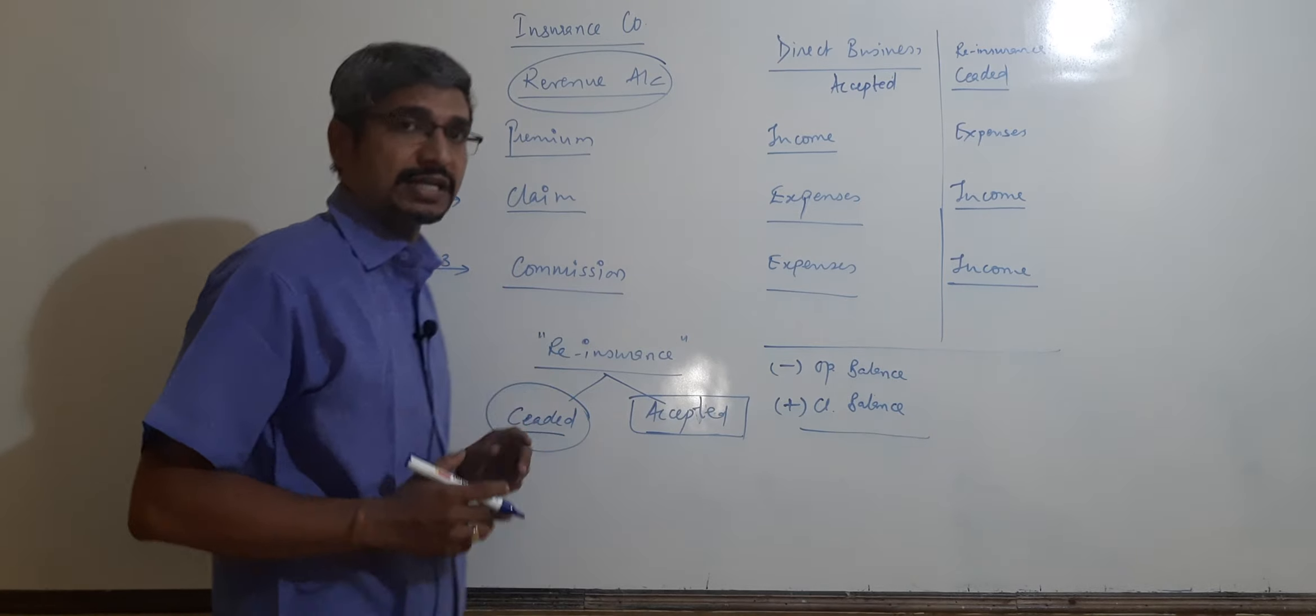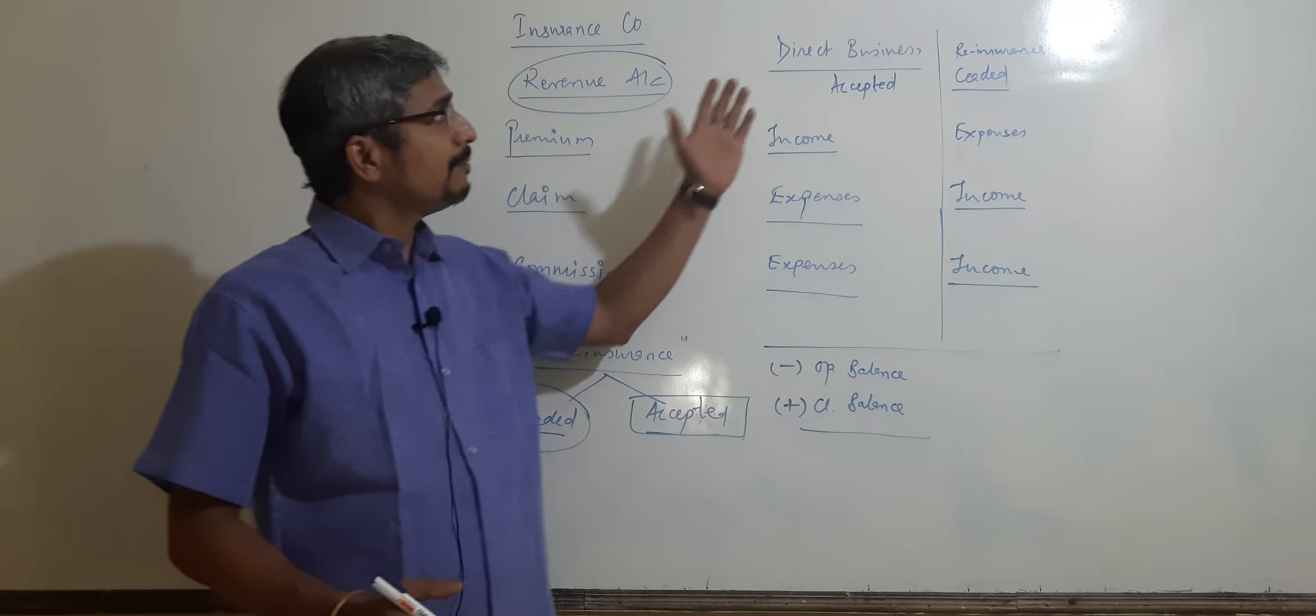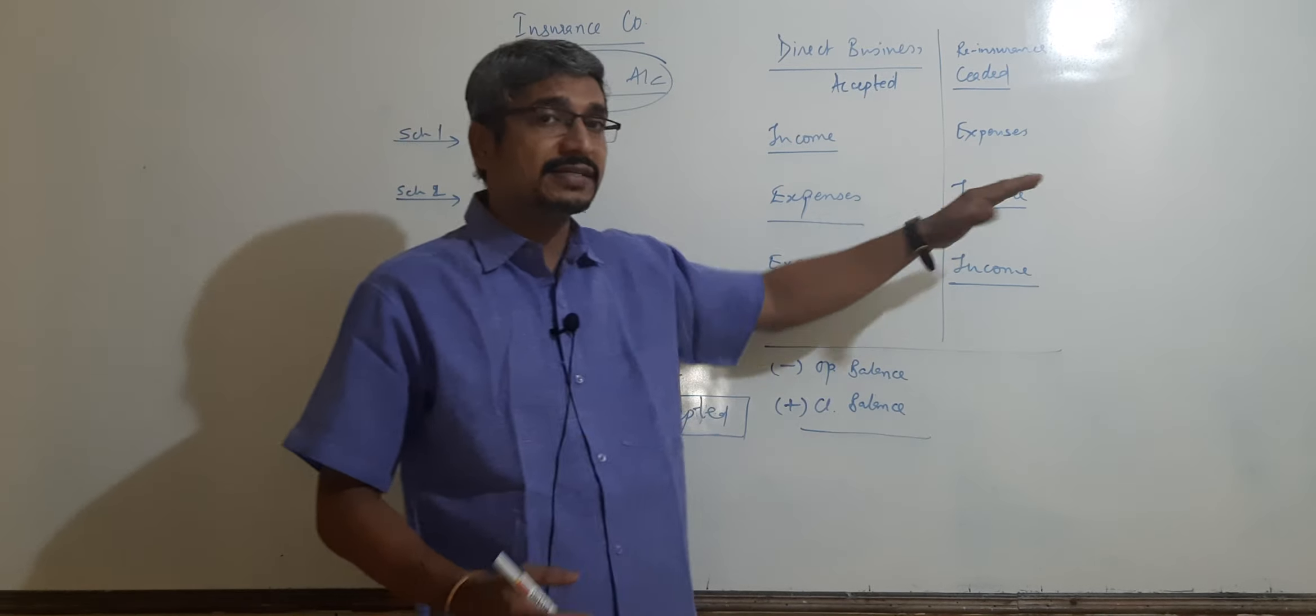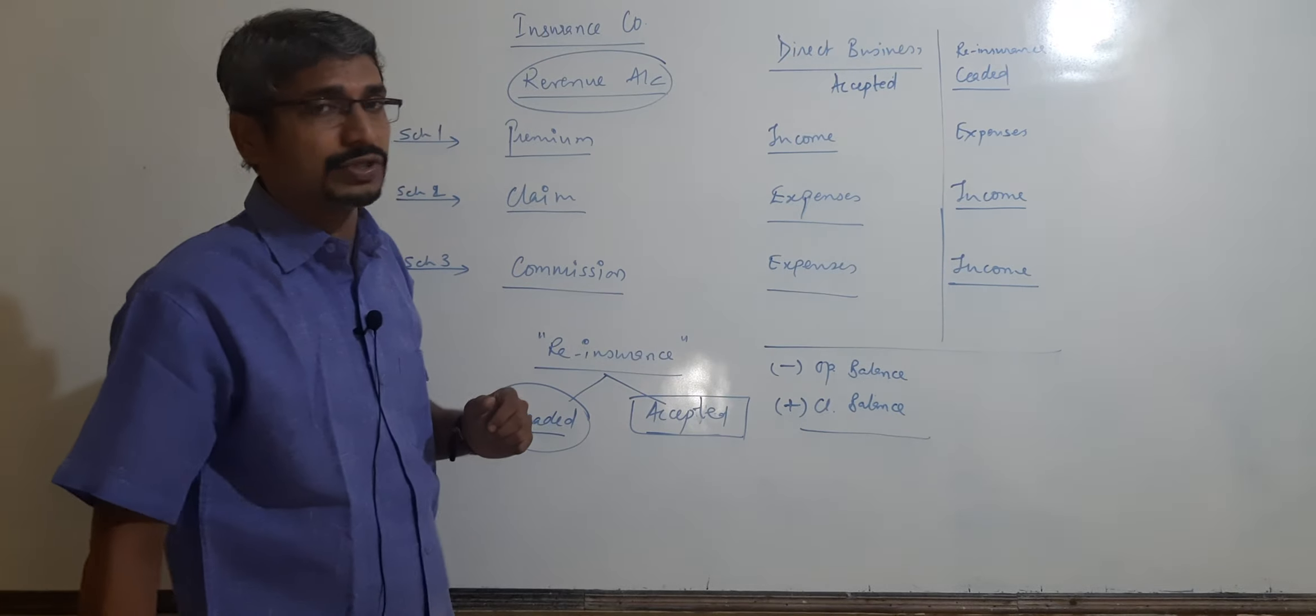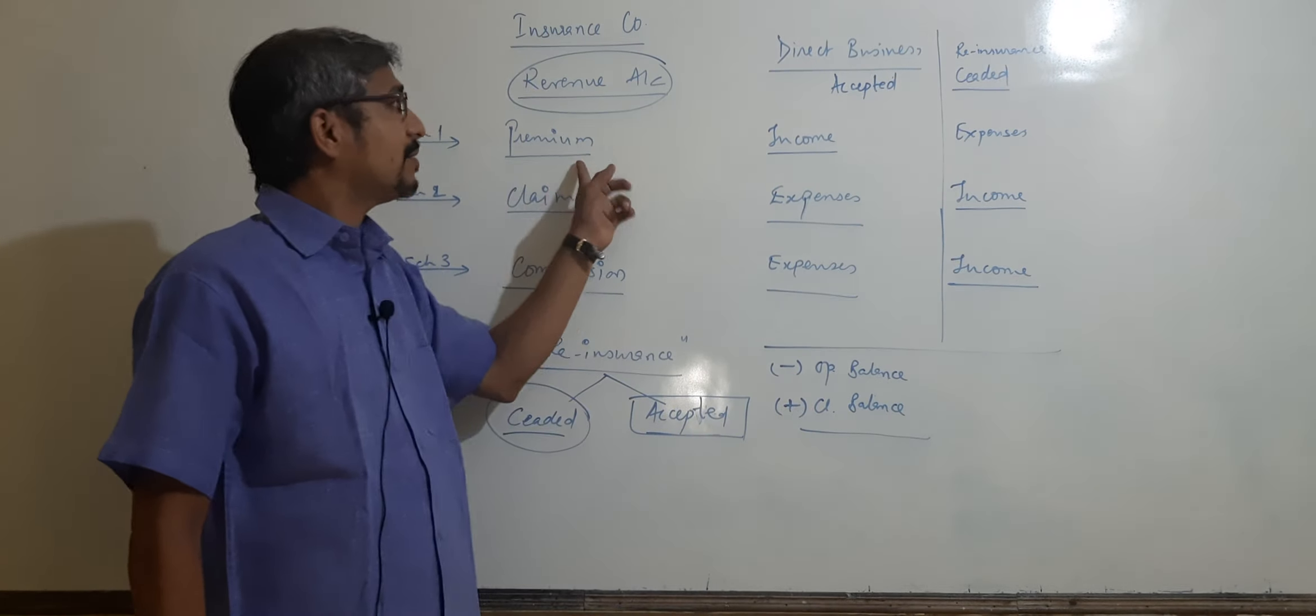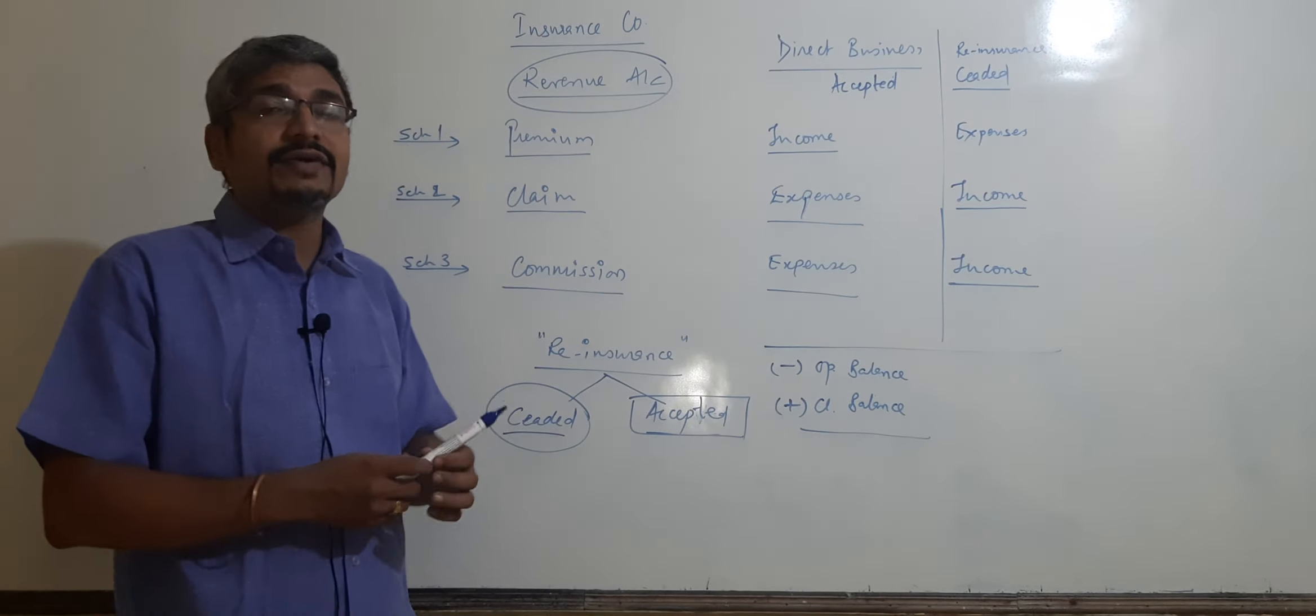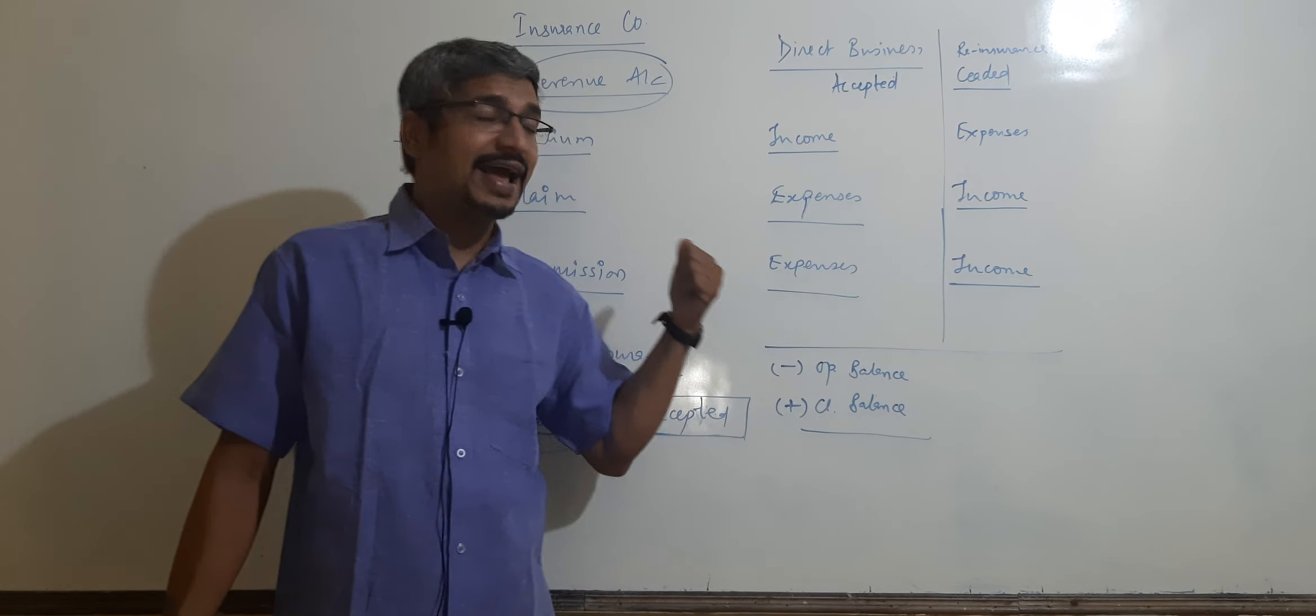We must understand the concept of reinsurance, reinsurance ceded and accepted. Similarly, direct business and reinsurance business where the premium becomes income and expenses. When you take a question, in case of reinsurance ceded, premium is dash. So it will be expenses when you are ceding it, when we are taking our reinsurance. So this is what reinsurance ceded and accepted.